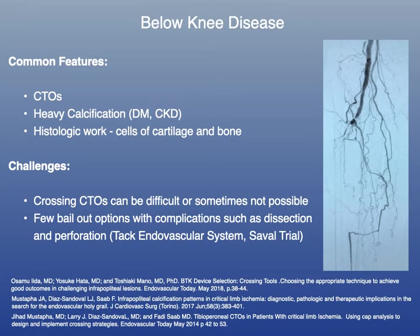When dealing with tibial disease there are some common features: CTOs, heavy calcification — even more so in patients with diabetes and CKD. There is histologic work showing cells of cartilage and bone in these CTOs, which can make crossing them difficult or sometimes impossible. You have few bailout options when complications such as dissection and perforations occur. The TAC endovascular system was recently FDA-approved and may help with dissections, and the SAVAL trial studying a dedicated tibial drug-eluting stent may be useful in the future as well.